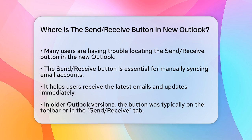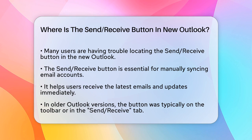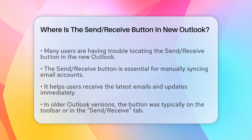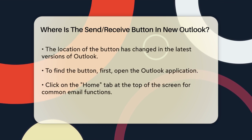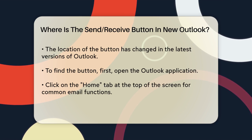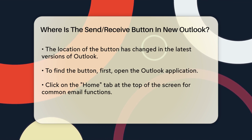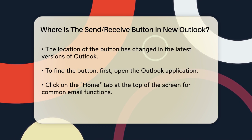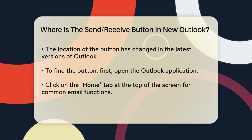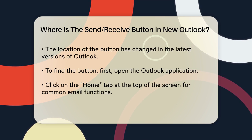In the older versions of Outlook, this button was usually found on the toolbar or in the Send Receive tab. However, in the newer versions, Microsoft has made some changes to the interface. To find the Send Receive button in the New Outlook, you need to look in a slightly different place.